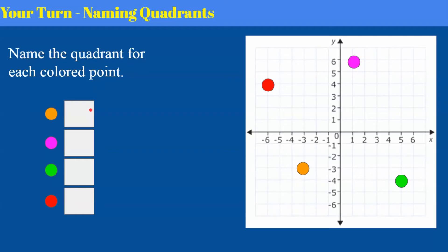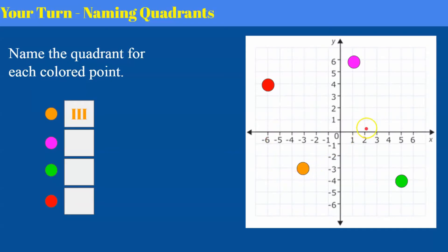Welcome back. Let's see how you did. Our first box is our orange point — over on the coordinate plane, our orange point is in the third quadrant. Our pink is in the first quadrant. Our green is in the fourth quadrant. And our red is in the second quadrant.